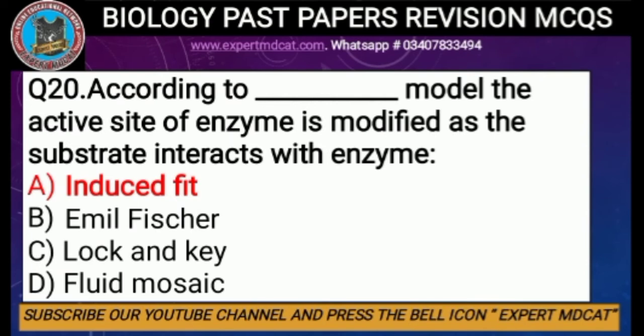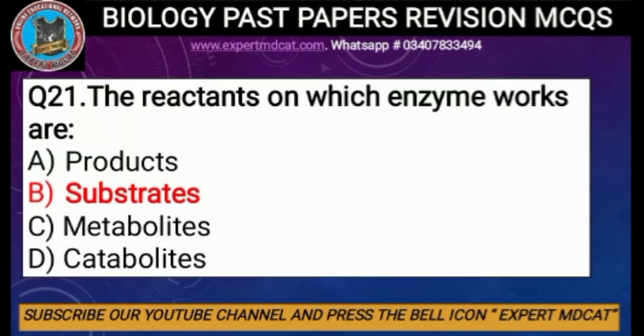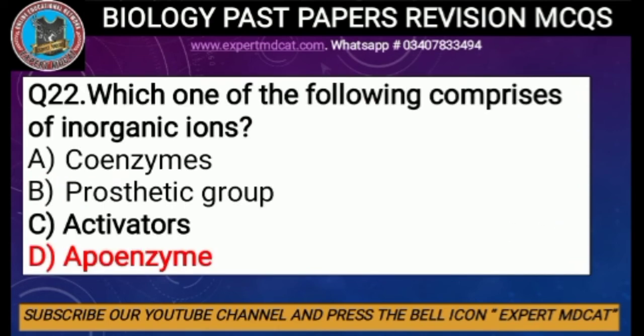Question number twenty: according to which model is the active site of an enzyme modified as the substrate interacts with it? The active site being modified by the substrate refers to the induced fit model, proposed by Daniel Koshland in 1959. Question number twenty-one: the reactants on which enzymes work are called — we call them substrates. The correct option is B, substrate.